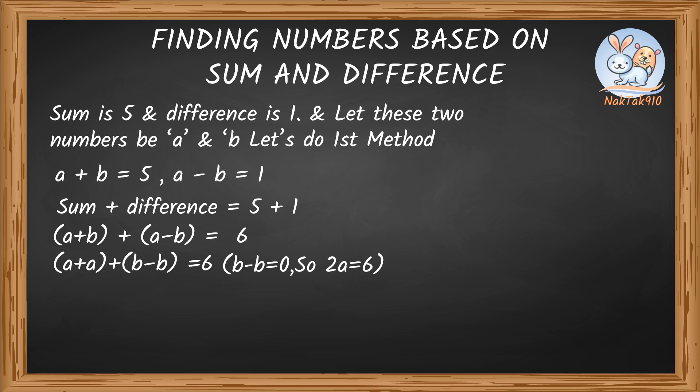We can find the value of a by dividing both sides by 2. So 2a divided by 2 is 6 divided by 2. We get a equals 3.